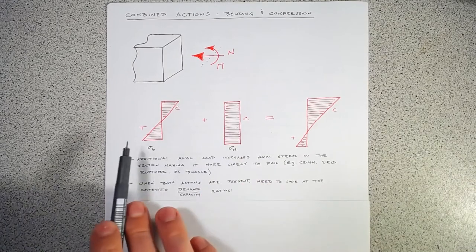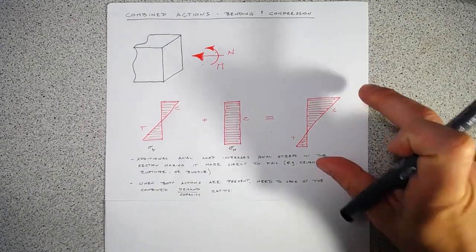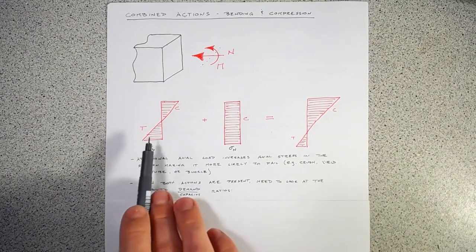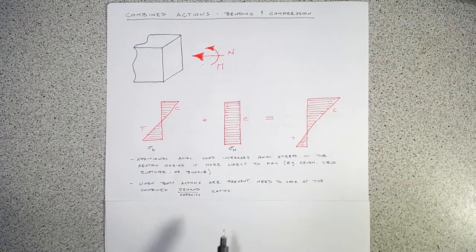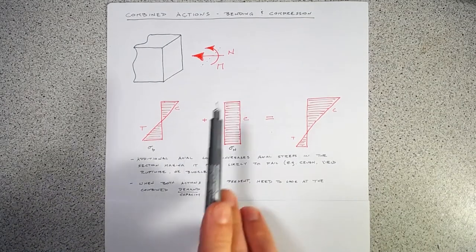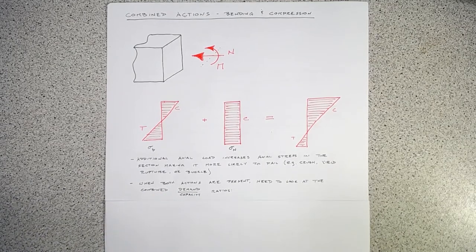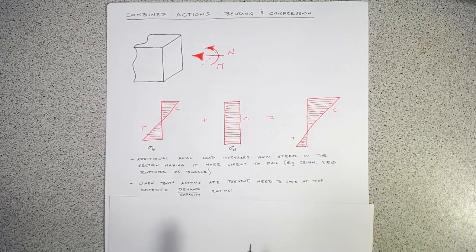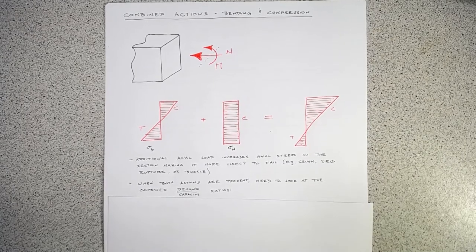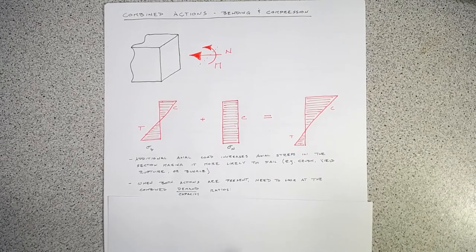We're going to focus on bending and compression combined. There are similar formulas for tension, but that's outside the scope of today. Just like our other designs, we first determine the section capacity, then the member capacity over some length, and we'll do the same thing here.